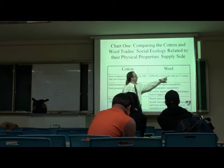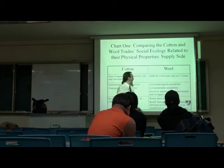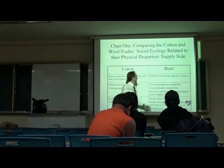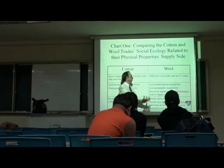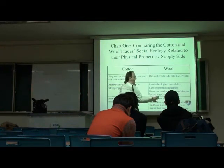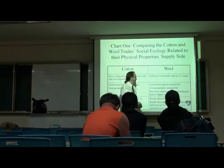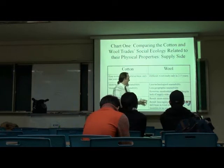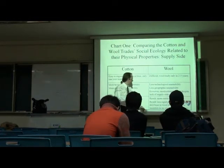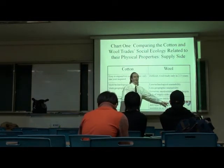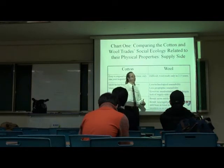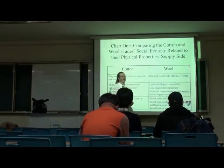Wool. Difficult. It only takes two or three years. There's less technological availability. You can only grow it in a few places. However, people still want it. And it's used despite capitalists. Capitalists don't like it as much as cotton. However, there's a more stable wool trade. And there's less proletarianization. There's less of a Marxist class conflict.